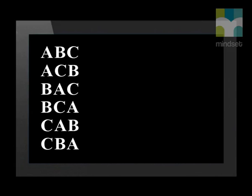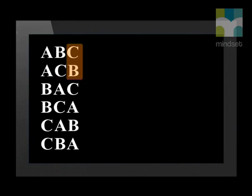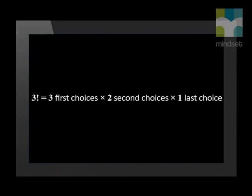The first letter can be one of three options — A, B, or C. The second option can only be one of two options, though. If the first letter was A, then the second would be either B or C. If the first letter is B or C, they also only have two options of letters after them. Then there is only one option left for the last letter — it will be what the other two letters are not. There are six different combinations. We can use factorial notation to find the number of combinations without writing all of them down. Three factorial gives us three times two times one, which equals six — thus six different permutations are possible.